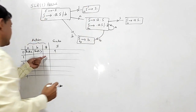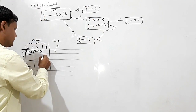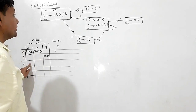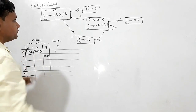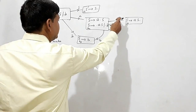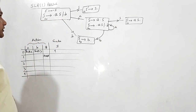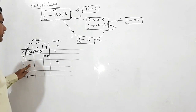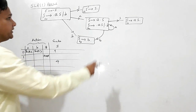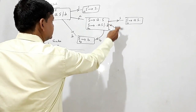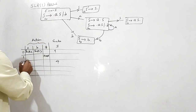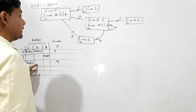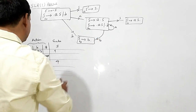At state 0, reading B gives shift 3. At state 1, at dollar, S can be reduced to S', so at dollar I will write accept. At state 2, if I am reading S I am reaching state 4. If I read A I will be shifting to state 2 only, and if I read B I am shifting to state 3.